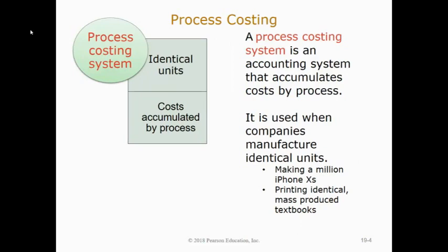This is different from the other system of inventory costing, which is called process costing. Process costing is used by companies that mass produce a ton of the same exact identical units — like iPhones. They make millions of those things and there's nothing special about one from the other. They don't make them one at a time; they produce batches of hundreds if not thousands at a time in stages of production. It's an assembly line. The same is true with mass-produced textbooks sold to hundreds of different colleges. Process costing is essentially the accumulation of costs as they go through the various different stages of production.